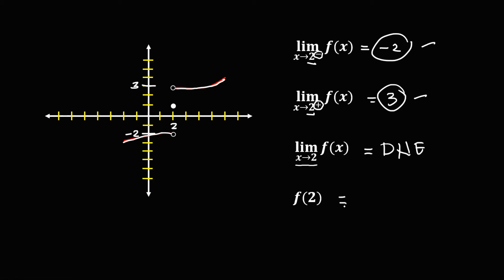And for this function, f of 2 — if x is equal to 2, we just need to look for the shaded circle. At x equals 2, this one is the shaded circle, so therefore the function is equal to positive 1.